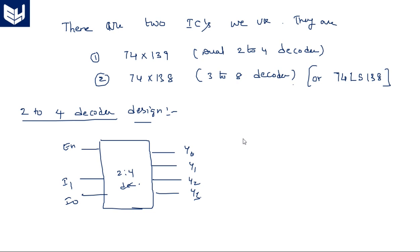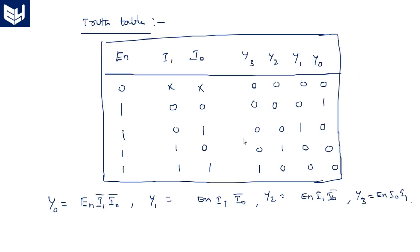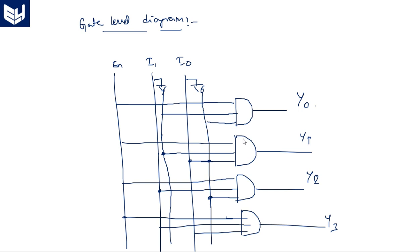The 74LS139 is a dual 2-to-4 decoder and the 74LS138 is a 3-to-8 decoder. The 2-to-4 decoder consists of an enable pin with two inputs and four outputs. The truth table, Boolean expressions, and gate-level design were covered in the previous video.